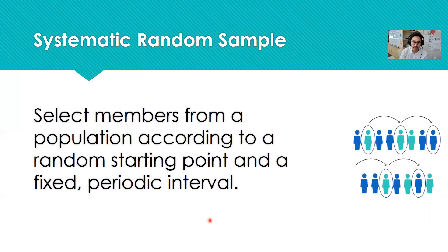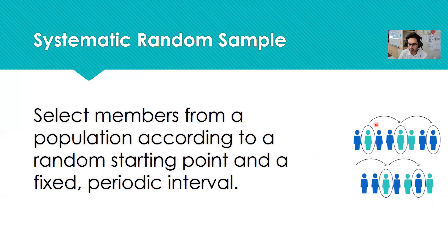The fourth and final method is the systematic random sample, which selects members according to some random starting point and then a fixed periodic interval. In the graphic, every third person is being selected — they probably randomly chose one of the first three people, and then chose every third person afterwards.